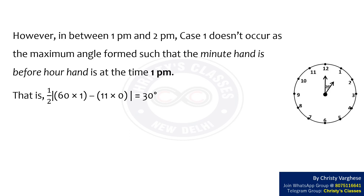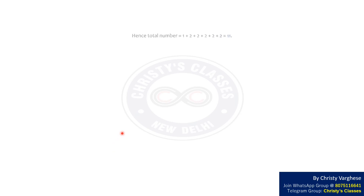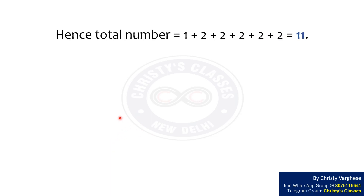In between all other pairs of hours, the angle of 40 degrees is made twice due to the two cases. Hence, the number of times a 40-degree angle is formed between 1 pm and 7 pm equals 1 + 2 + 2 + 2 + 2 + 2, that is 11 times.